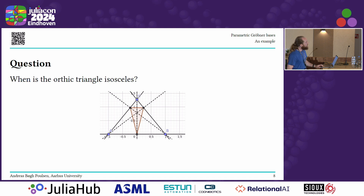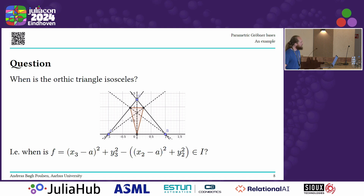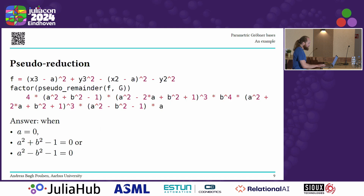We want to ask: when is the orthic triangle isosceles? Isosceles means the distance from P1 to P2 equals the distance from P1 to P3. We can answer this as an ideal membership question — when is the polynomial describing the difference between the two distances in the ideal generated by this setup? We do this in Julia using pseudo-reduction: we construct the ideal, factor the pseudo-remainder of this polynomial with respect to the Gröbner basis, and the inclusion holds whenever a squared plus b squared minus one is zero.